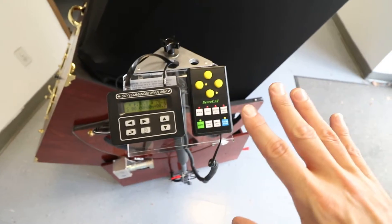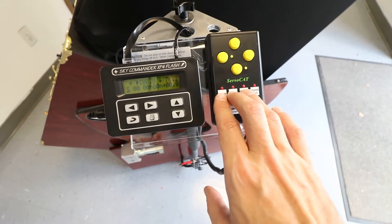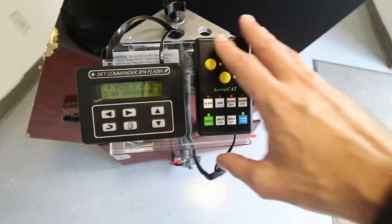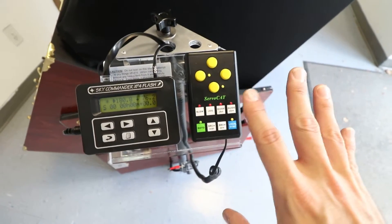That will stop the telescope dead in its tracks. So any three keys, could be these three, could be these three, could be these three, these three, these three. Any three keys on this hand pad here will stop the telescope.